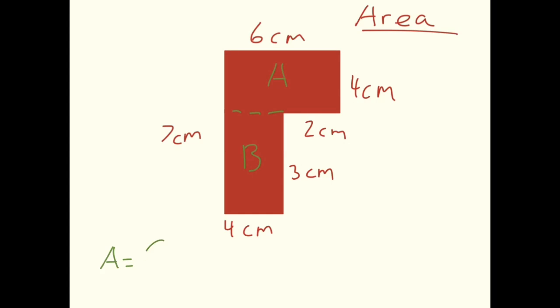We need to do 6 times 4, which gives us 24 centimeters squared. That is the area of shape A.